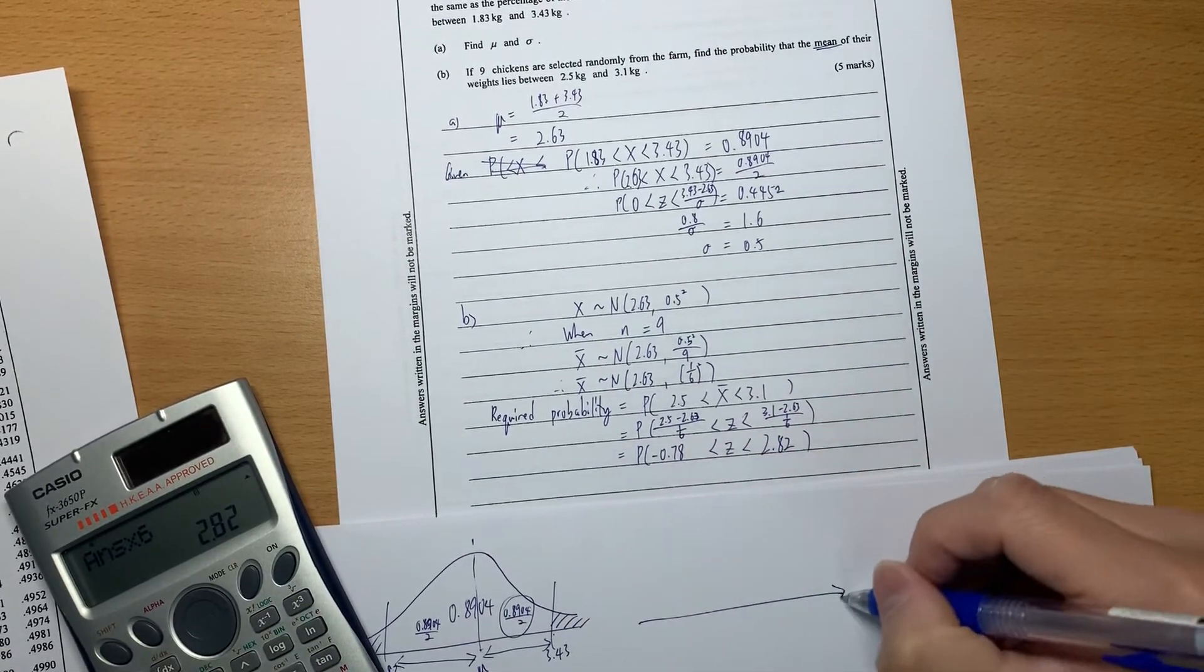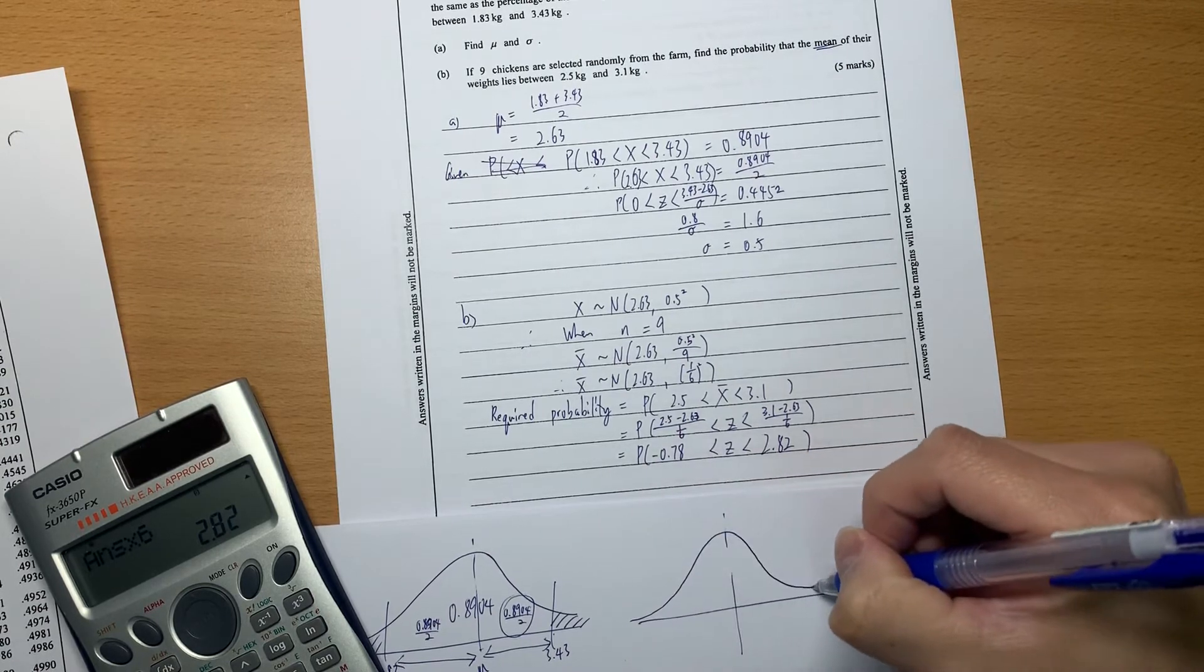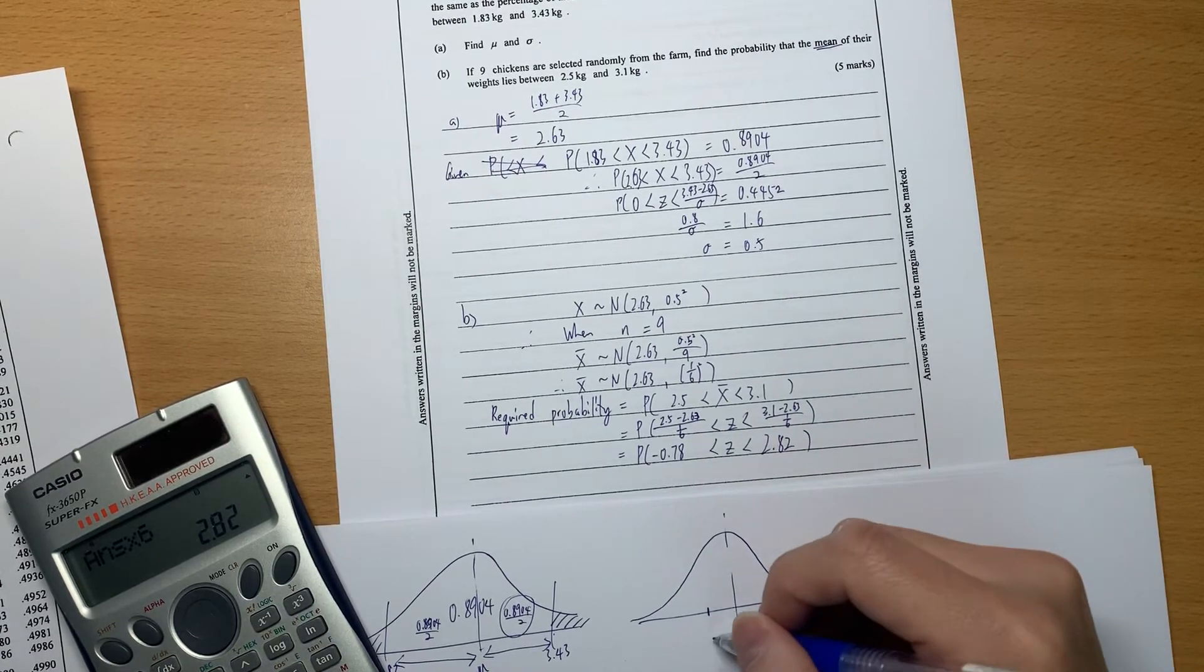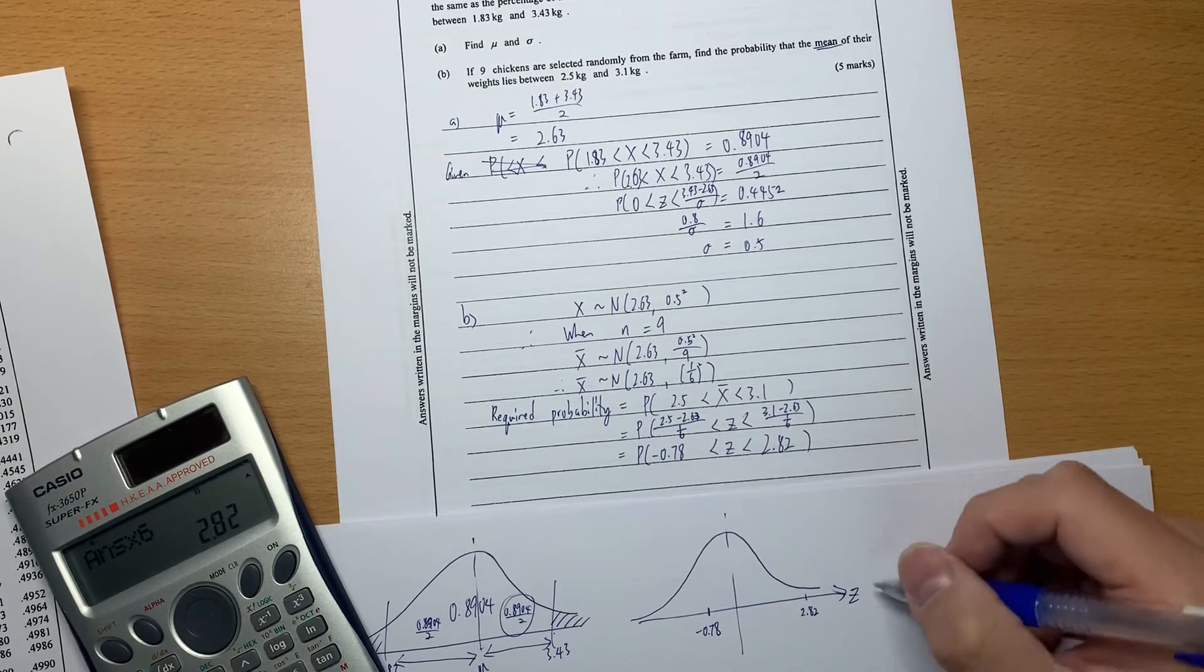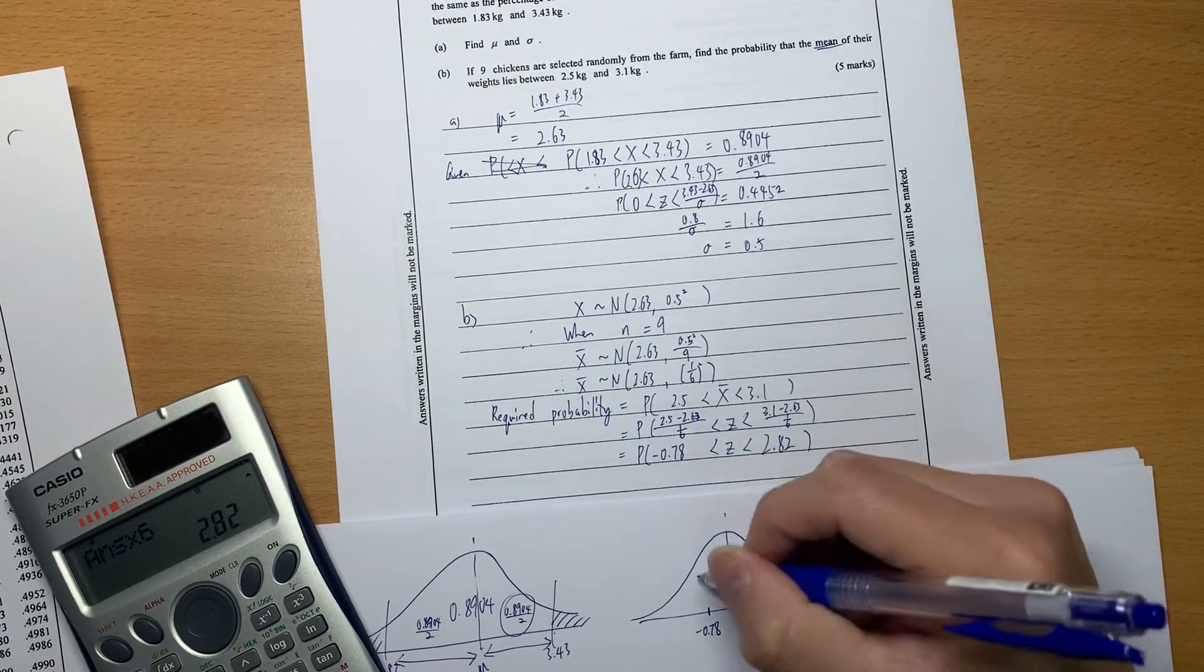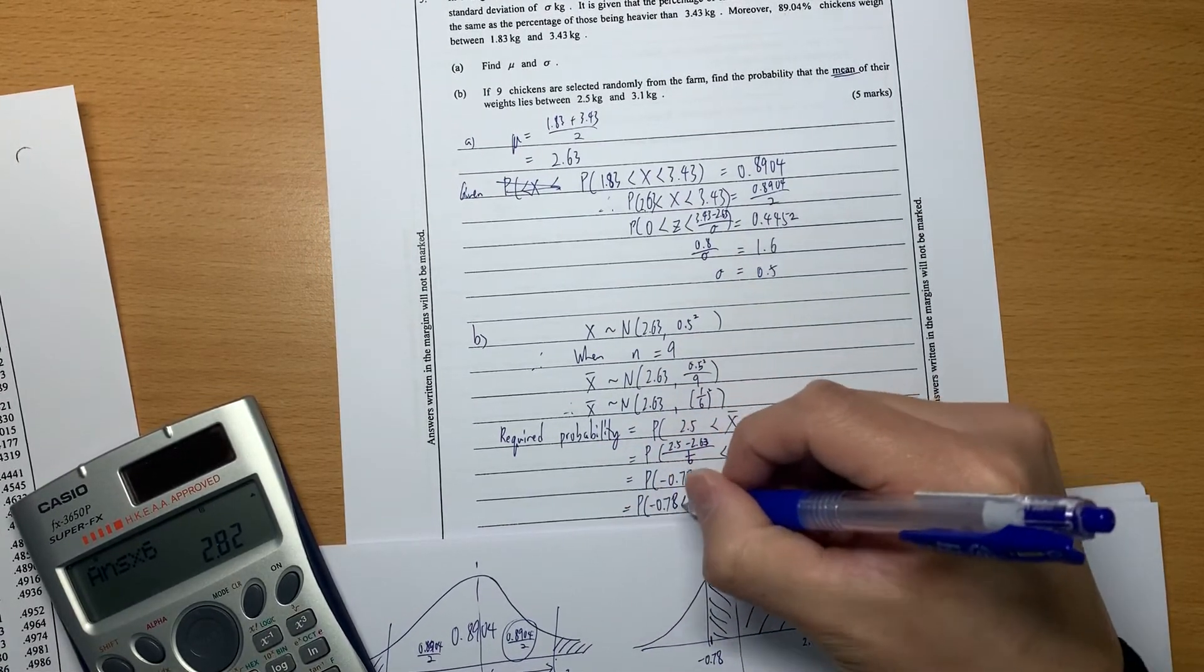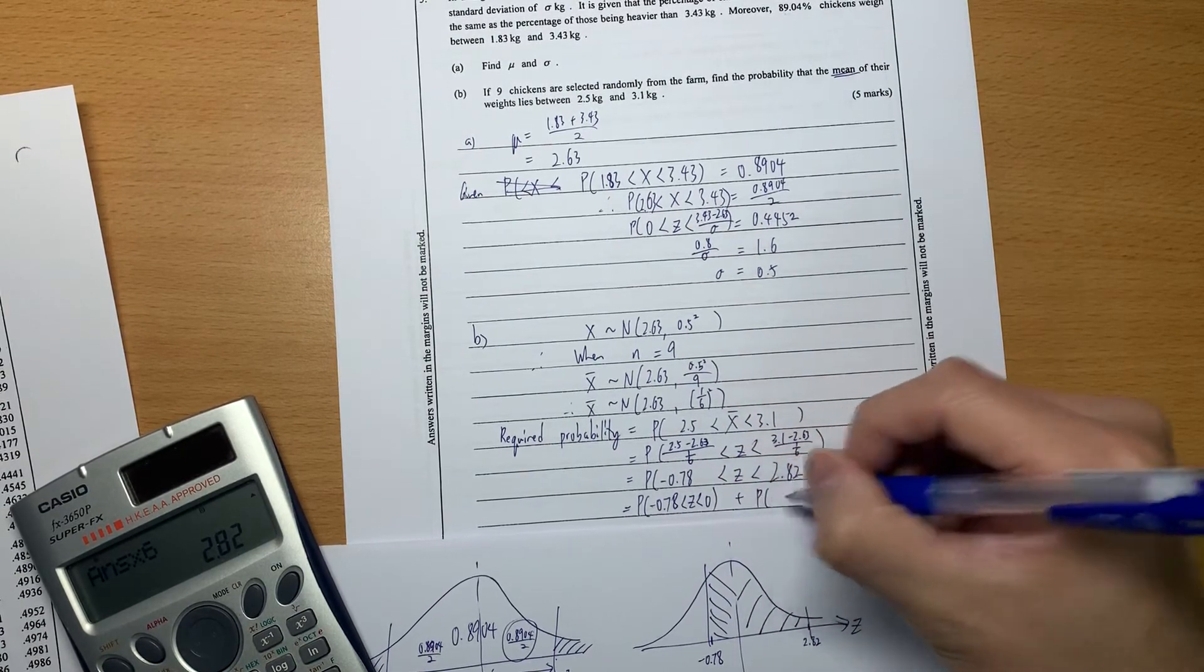We are asking for this situation. This is negative 0.78, the standard score is negative 0.78, and this is 2.82, a little bit closer to our mean. We are talking about z here. We want to know this area together with this area - negative 0.78 and then between z to 0. We need to separate it so we can use the table.